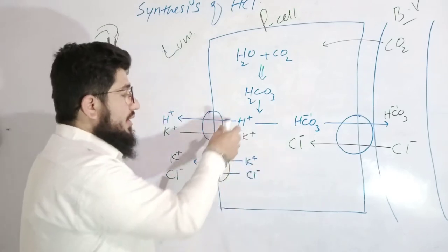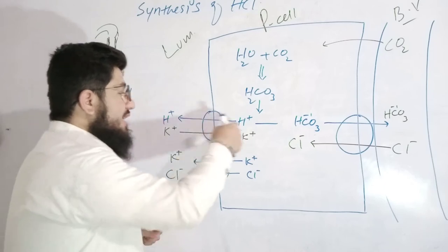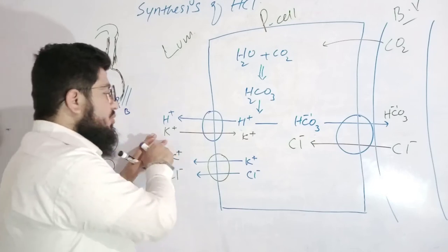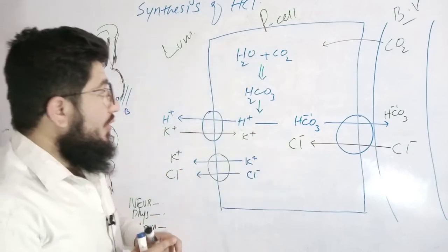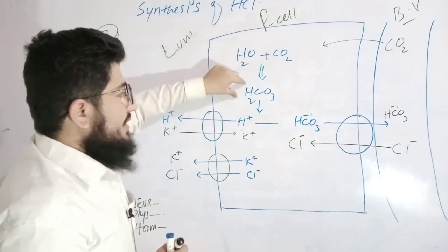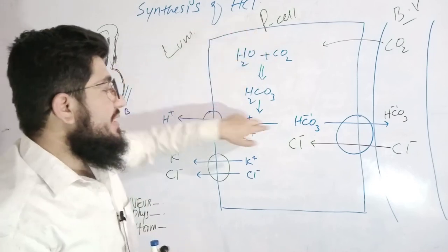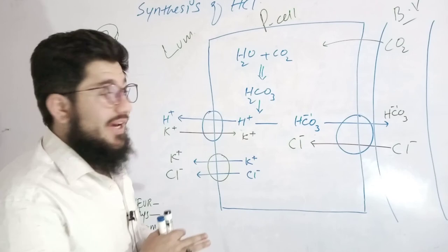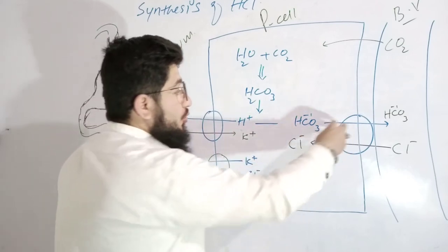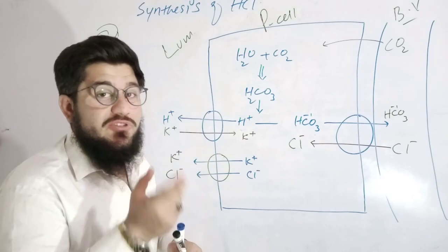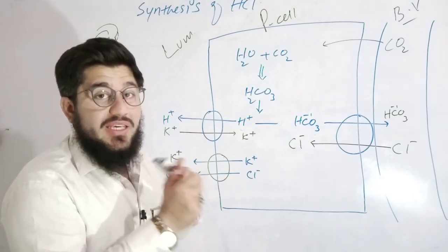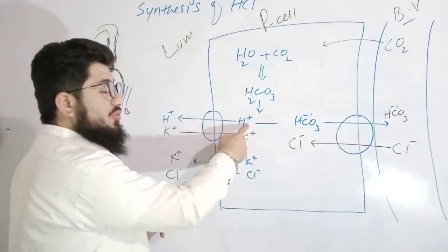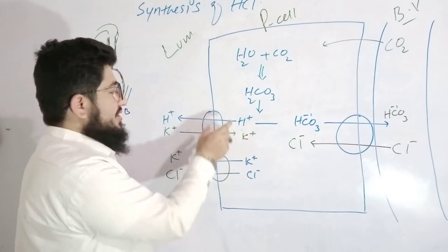The H⁺ proton moves towards the lumen, while K⁺ moves into the parietal cells. So to summarize: water and CO2 synthesize carbonic acid, which splits into H⁺ and bicarbonate ions. These ions move out of the parietal cells using antiport transporters — they are called antiport because they transport substances in opposite directions. Bicarbonate is transported against chloride, and hydrogen is transported against potassium.